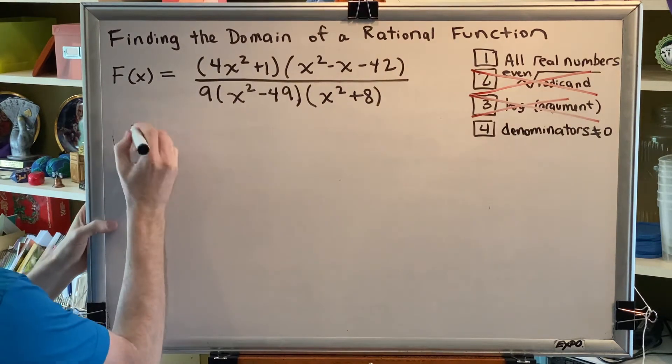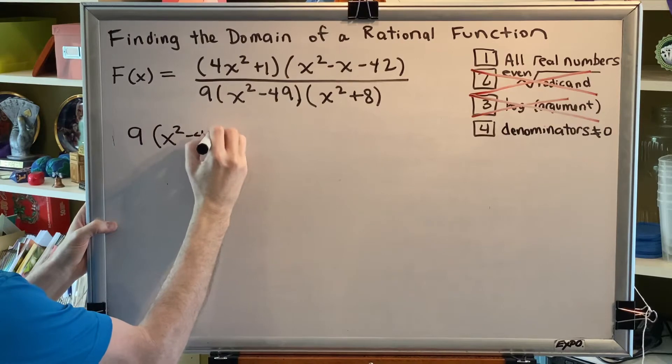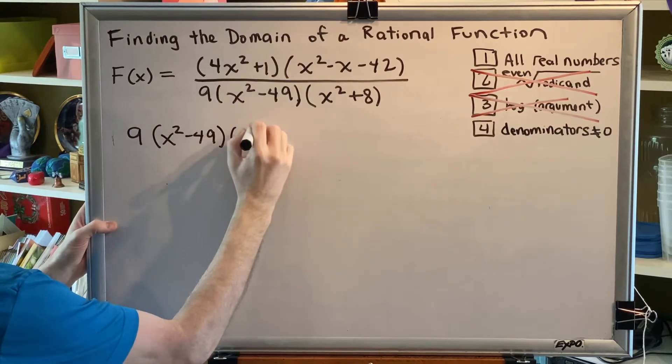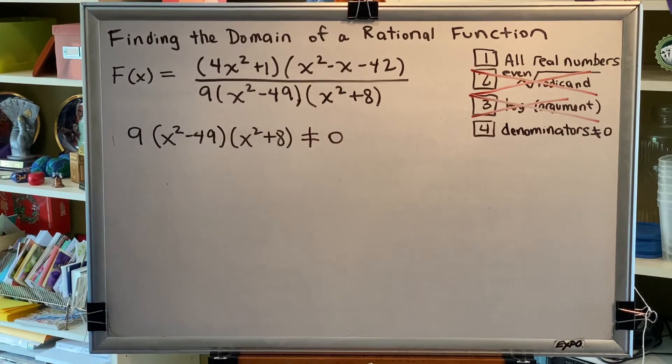Our denominator in this problem is 9(x² - 49)(x² + 8). So therefore, that is not allowed to be zero.